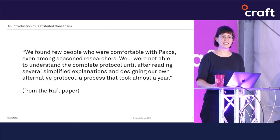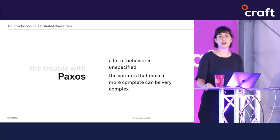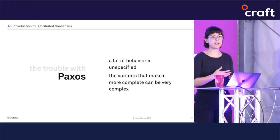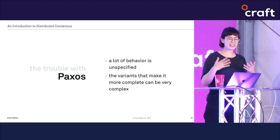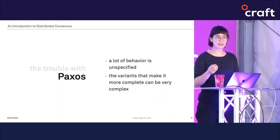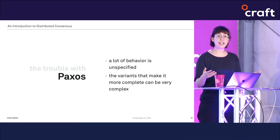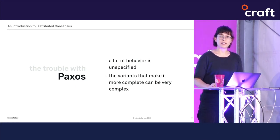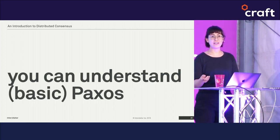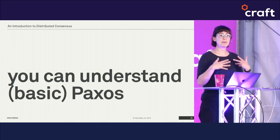That probably sounds daunting, but I'm going to show you how Paxos works. The trouble with Paxos comes from the fact that a lot of its behavior is unspecified in the original paper — many details are left as an exercise to the reader, making it difficult to implement correctly. There are dozens of variations, many quite complex, but basic Paxos is actually pretty intuitive.